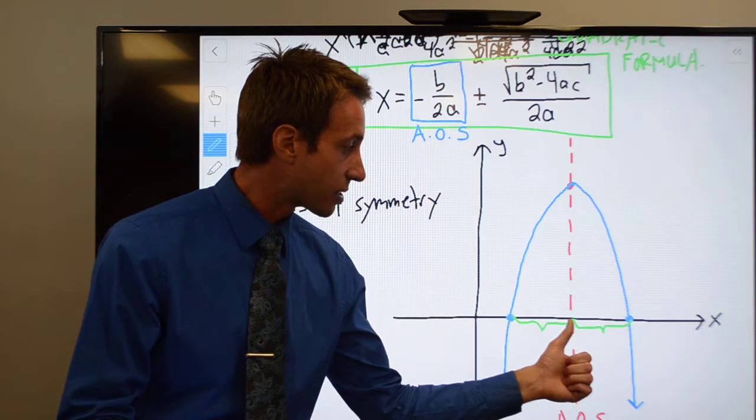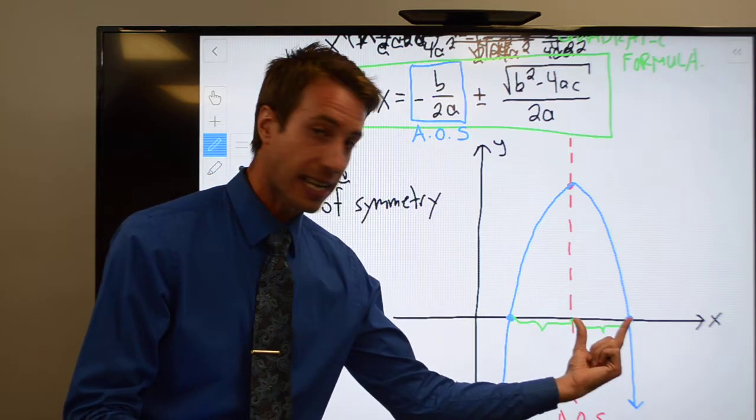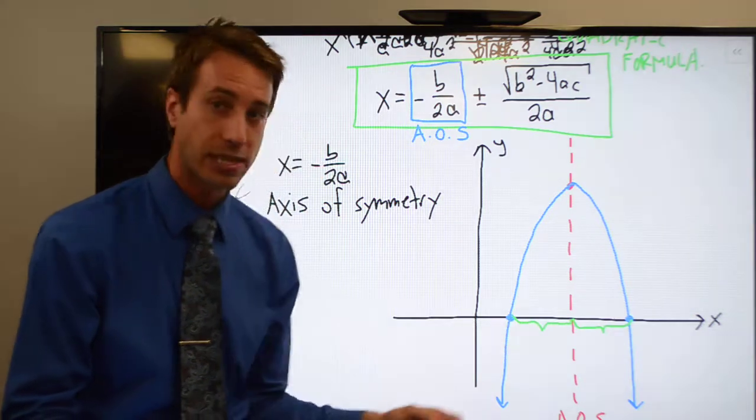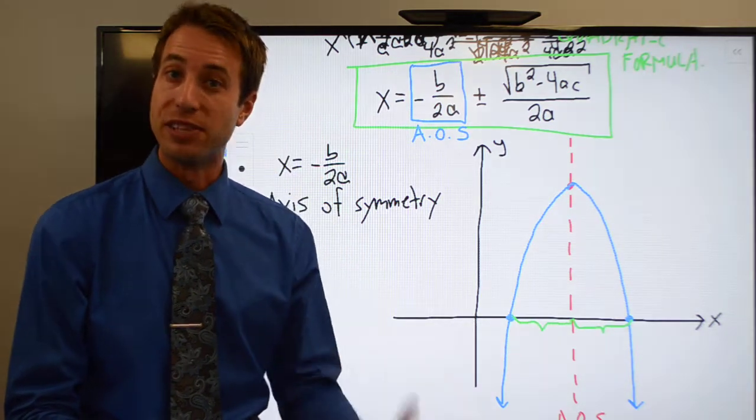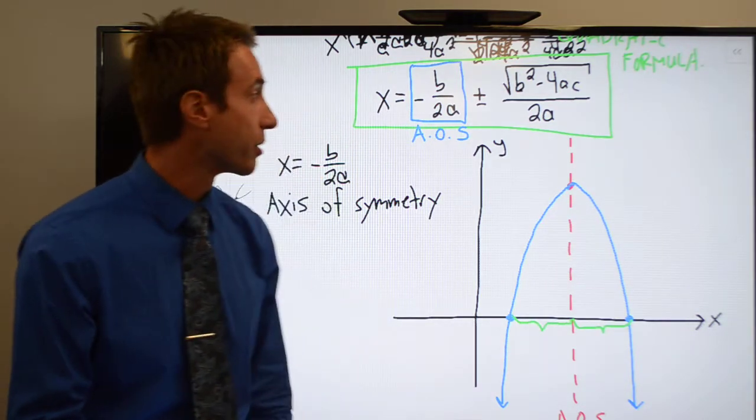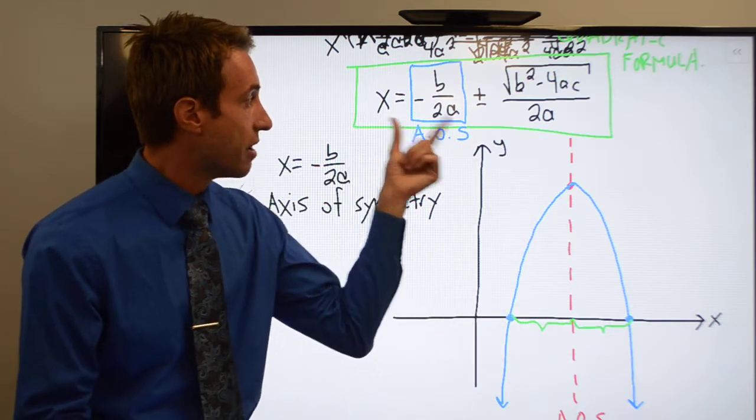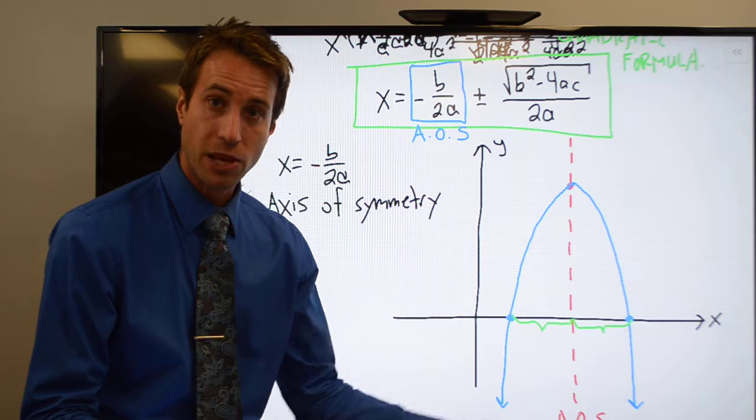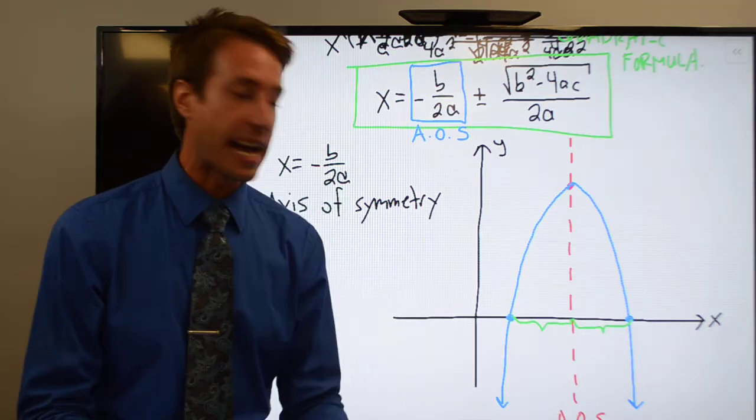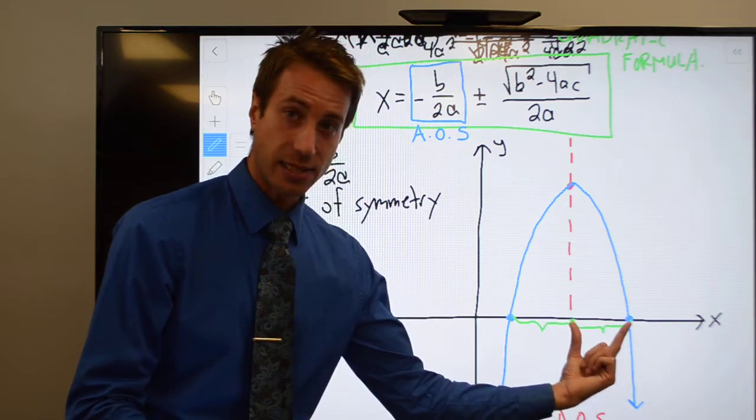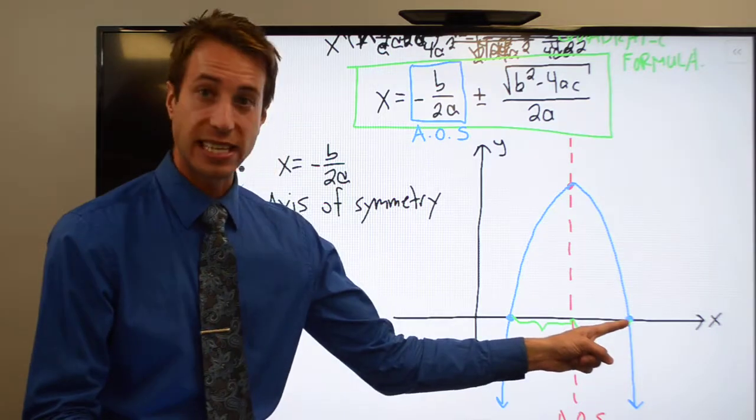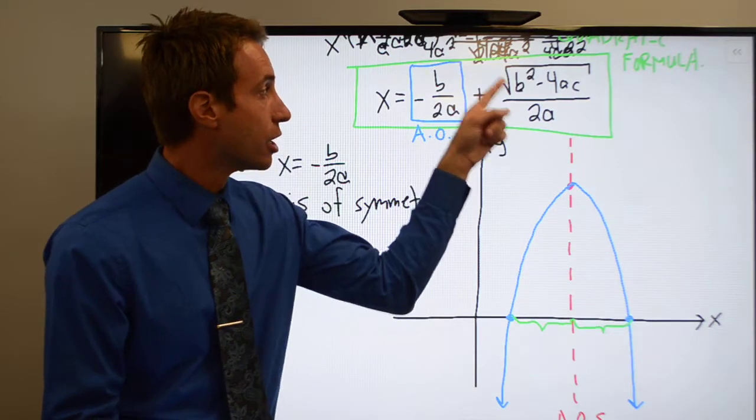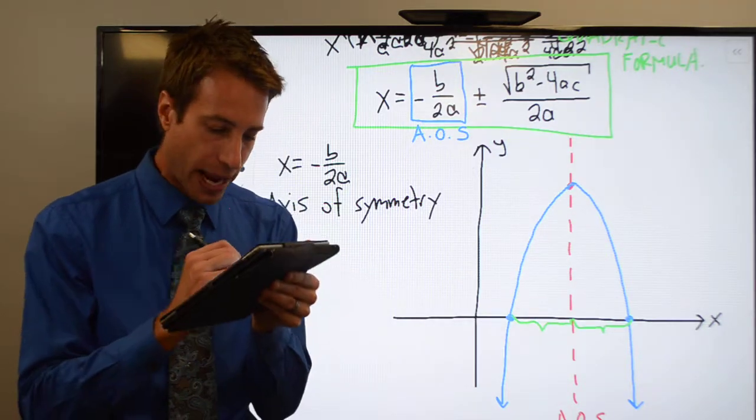So the distance from the axis of symmetry to this x-intercept and the distance from the axis of symmetry to this x-intercept have to be the same. So here's what the quadratic formula does. The quadratic formula finds the axis of symmetry. There it is right there. It will then add this distance to find your first x-intercept, which is why you have plus square root of b squared minus 4ac over 2a.